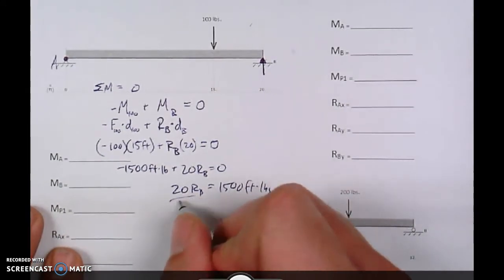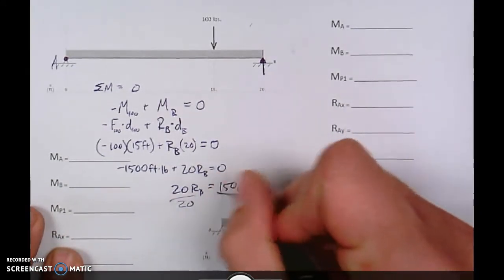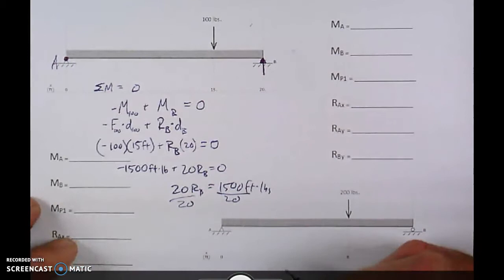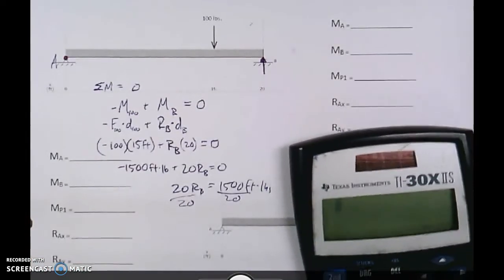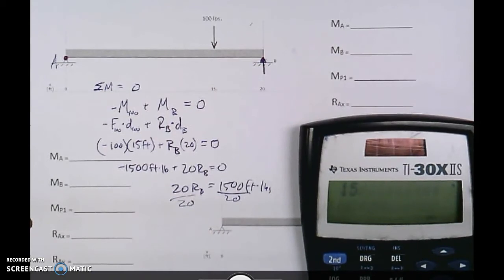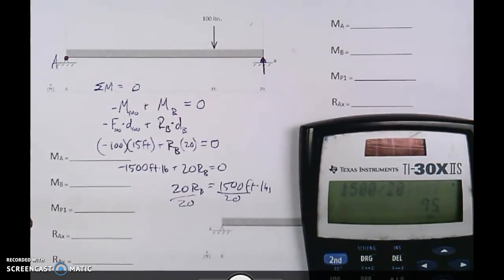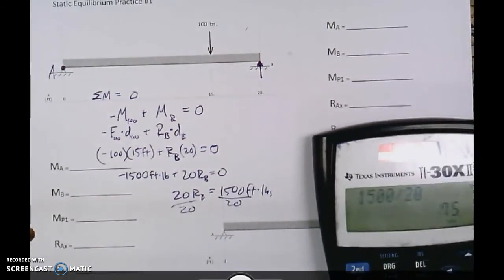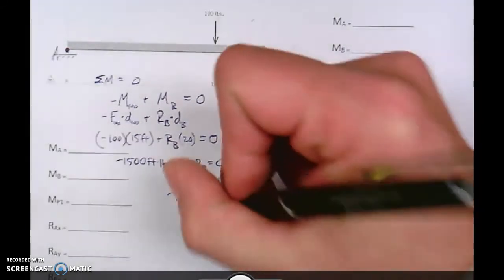I can divide out my 20 on both sides. And so then I can go to my calculator, and I can do 1,500 divided by 20. And I see that it will have a reaction force of 75 pounds at point B.